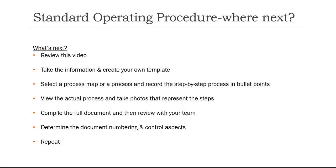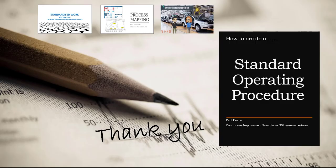That brings us to the end of this brief tutorial on how to create a standard operating procedure. To get the best out of this tutorial, I suggest taking the template in this video, making yourself a version in Microsoft Word, then getting a few people together and either transcribing the steps from a process map or writing down the steps in the process. Take photos that represent the bullet points, put all the ingredients together collaborating with your team, and determine the control aspects — document numbering, owner, acceptance — and then repeat. Please check out the other videos that will support you in creating standard operating procedures. Thanks for watching.